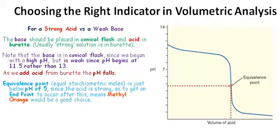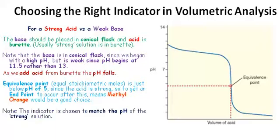To get the endpoint, we need the equivalence point to occur after the endpoint, so methyl orange would be a good choice here since the pH changes from 3.1 to 4.4. Note the indicator chosen is to match the pH of the strong solution, which is the acid.